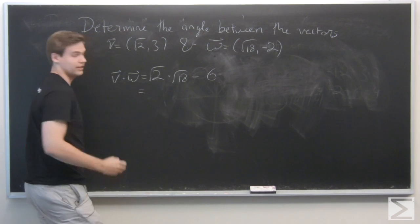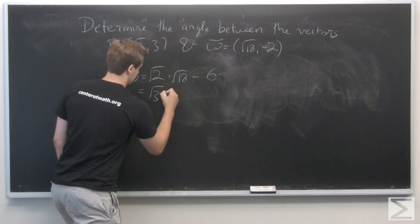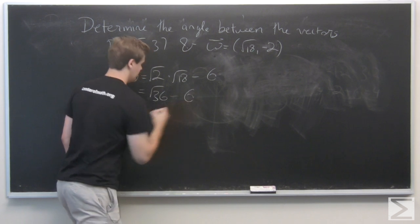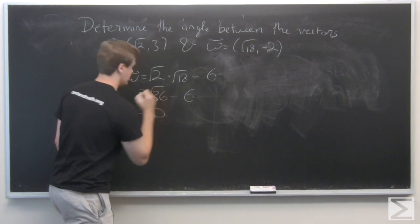Well, if we simplify this a little bit, we see that this is the square root of 36, minus 6. But the square root of 36 is just 6. So we see that this sum is actually 0.